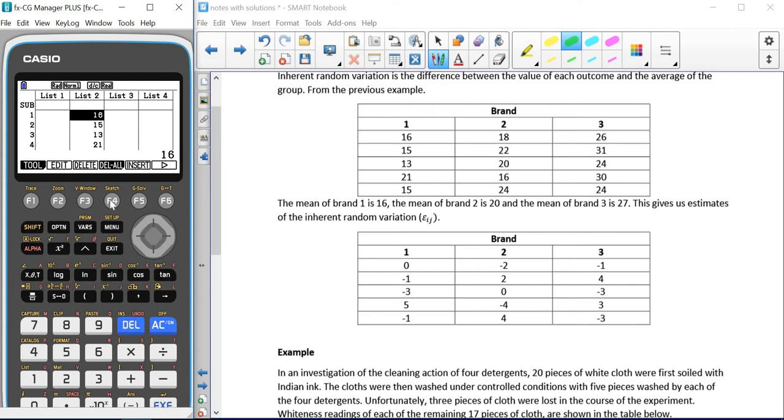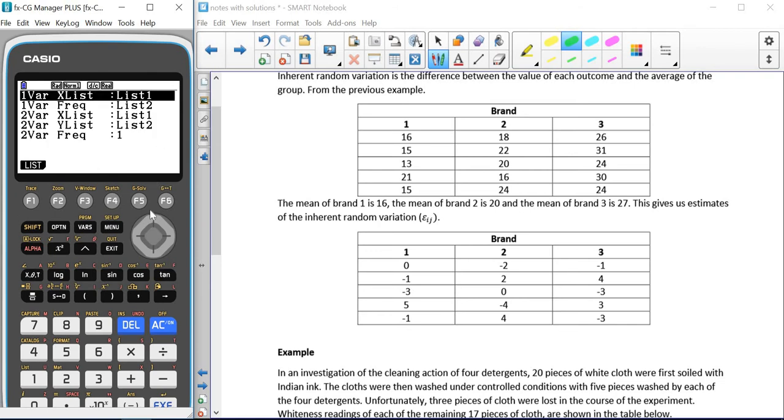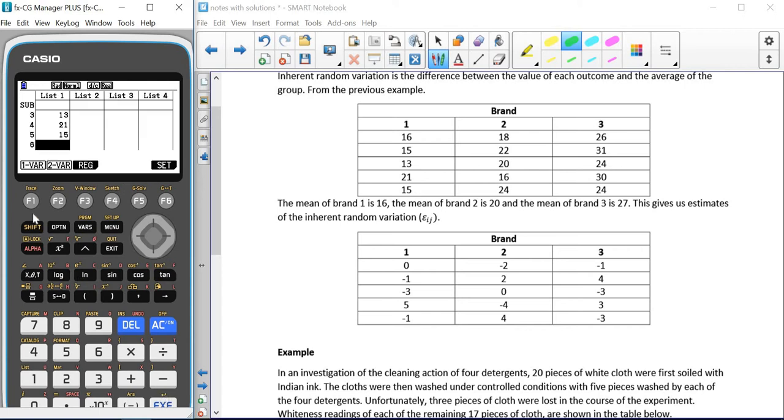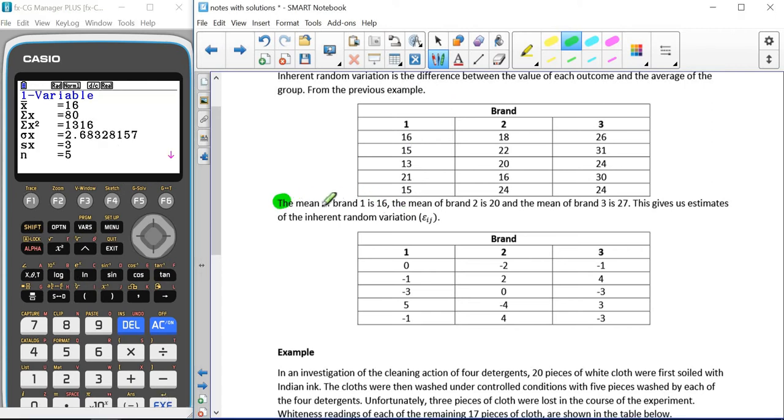I can delete everything that's in the second column as well. So for this first set of values, which is 16, 15, 13, 21 and 15, we need to check that our set says list 1, because we only have a list of values. We don't have any frequencies. We can see that the mean is 16 and that's what it says here.